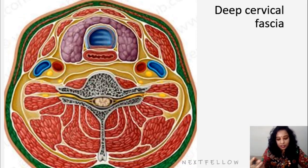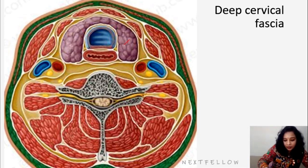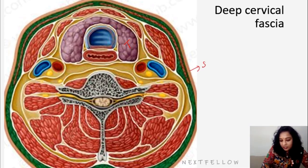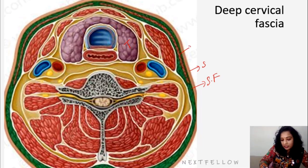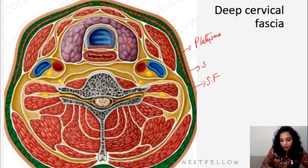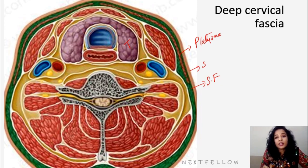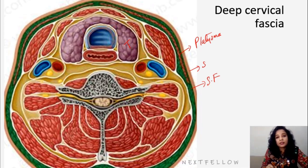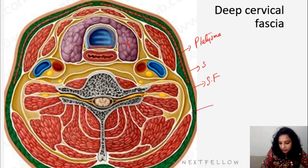Here we are seeing the cross section in the neck at the level of the thyroid gland. Here is the thyroid gland and we know the outermost covering is the skin. Beneath the skin there is superficial fascia, and within the superficial fascia, the muscle you are appreciating is the platysma muscle. The deep fascia — that is the investing layer — is present beneath the superficial fascia. This is the investing layer.